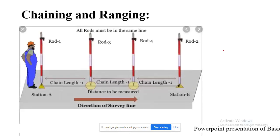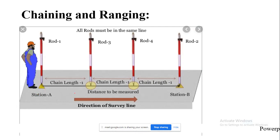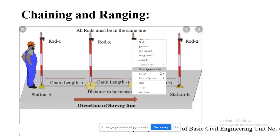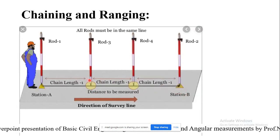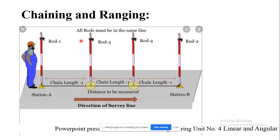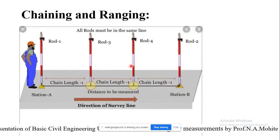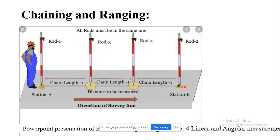Now we will see what the chaining and ranging operation looks like. A person is standing here as the follower, and stations A and B have been fixed on the ground, between which we want to measure the distance. Ranging rods are fixed at A and B, and intermediate rods at C and D are to be fixed such that all four rods are in a straight line, so that after inserting the chain we can measure the horizontal distance.